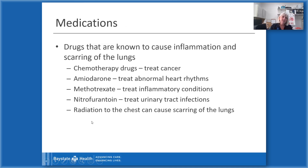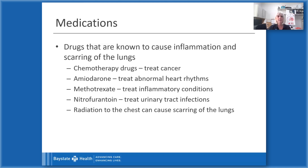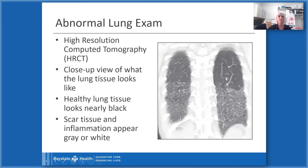Certain medications can lead to inflammation and scarring of the lungs: drugs used to treat cancer such as chemotherapy; amiodarone, used to treat abnormal heart rhythms; methotrexate, used to treat inflammatory conditions; and nitrofurantoin, used to treat urinary tract infections. Radiation to the chest for any reason can also cause scarring of the lungs. These are all offenders in the presence of interstitial lung disease.